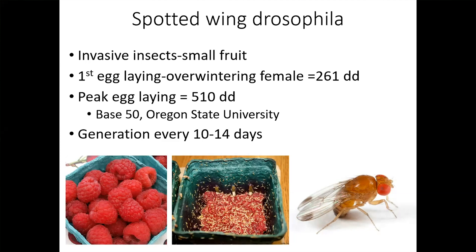After 500 degree days, for spotted wing drosophila you don't need to monitor degree days anymore because they're reproducing a generation every 14 days. But you do want to know when the peak population is — you don't need to be scouting or spraying for spotted wing drosophila until you're approaching that peak egg-laying activity.